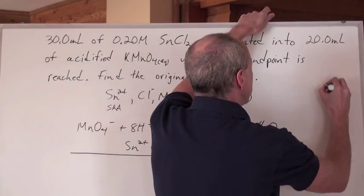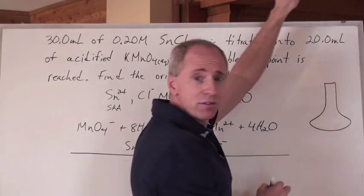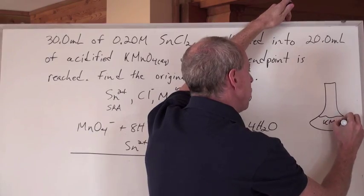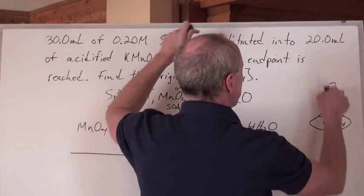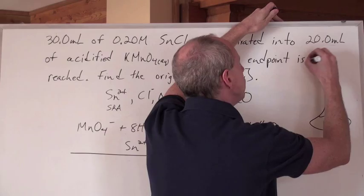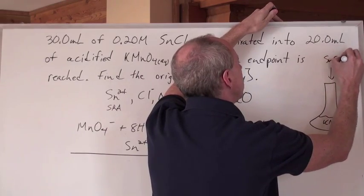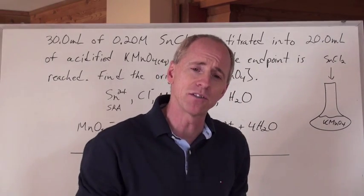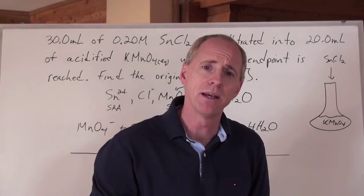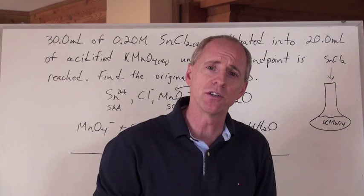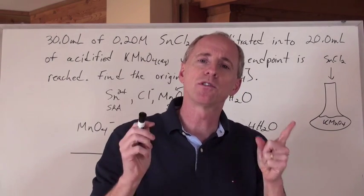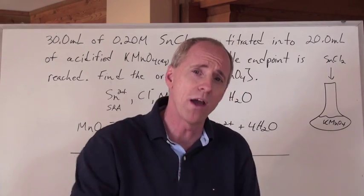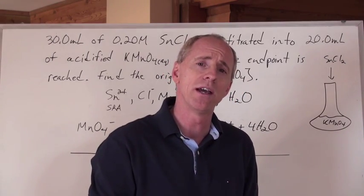You've got this flask, and you've got some KMnO₄ in it - 20 milliliters. You're going to pour into it this SnCl₂ solution and a reaction is going to take place. Something's going to happen - there's going to be a color change. When that color change occurs, you're going to be able to do some stoichiometry to figure out an unknown quantity. I'll tell you why that color change occurs as well.